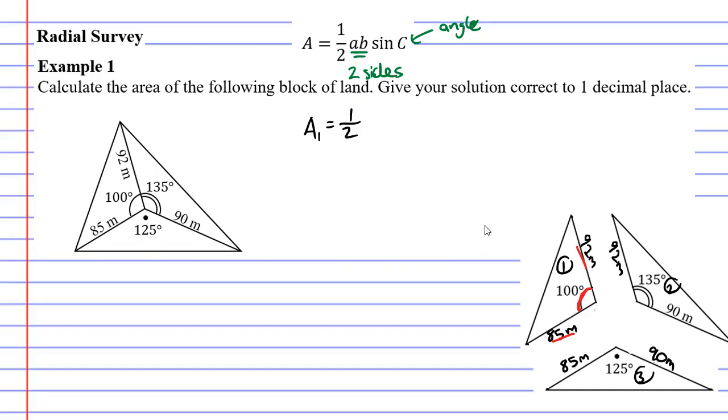It starts at the half and then it multiplies this by the two sides. So if I'm looking at triangle 1 my two sides are 92 and 85. Really doesn't matter which order I multiply these two numbers. And then I multiply this by sine of C. C being my angle which for triangle 1 is a 100 degree angle.